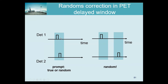Of course, it could be that both detected events are unrelated singles that happened to fall in the same time window — that's a random. To estimate how often this happens, you slightly shift the coincidence window by about a microsecond. You use exactly the same electronics and tell the camera: detect something here, then check for a detection in the shifted window. In a microsecond not much changes in the patient, so any coincidence found must be a random, since no true pair can span a microsecond.